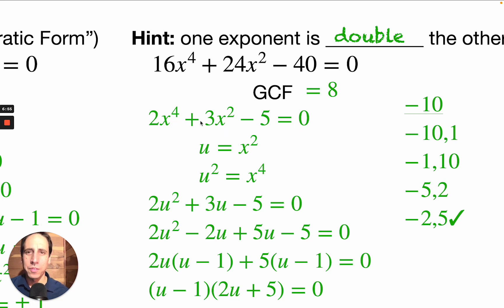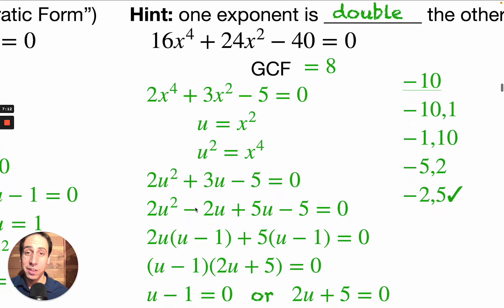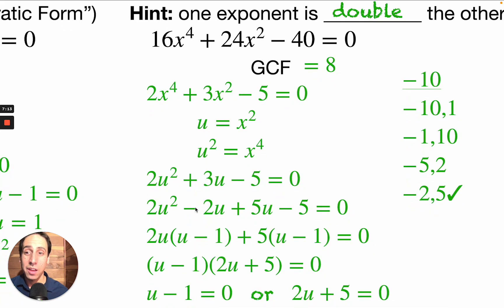I see that this exponent is double this exponent, so I'm going to use u-substitution. I'll choose u equals x squared, so u squared equals x to the fourth. Writing it as u's gives something that looks like chapter 3, and I can use split-the-middle on it. I notice there's a 2 here, so 2 times negative 5 is negative 10.